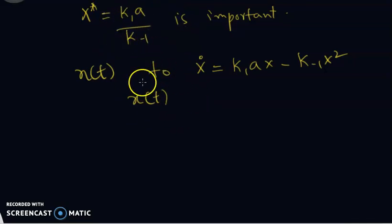So we can also calculate the solution of this and see that X(t) will ultimately be going to K₁A over K₋₁. Thank you.